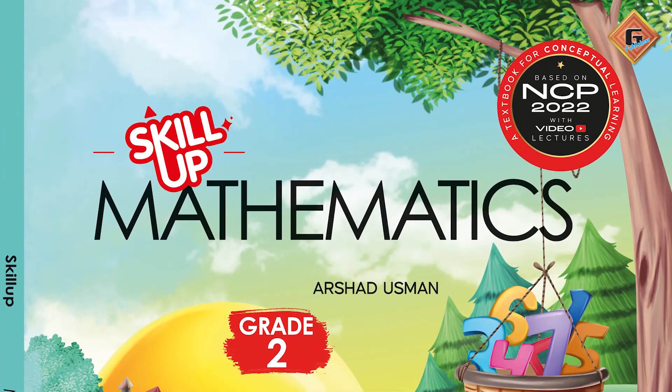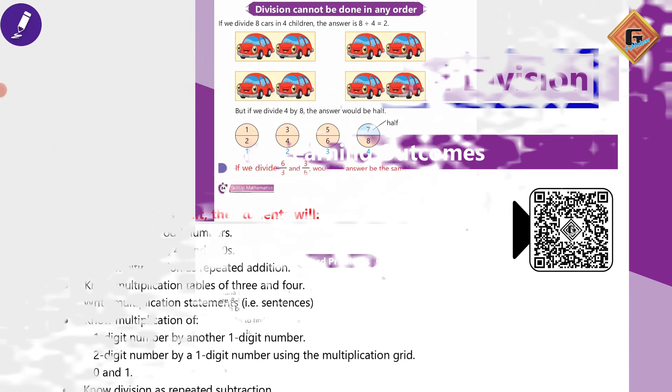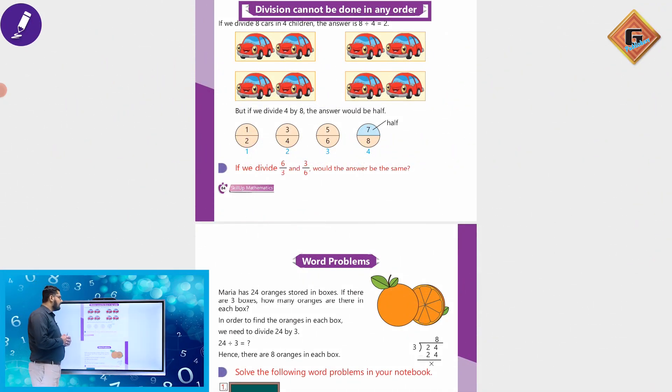In this book we are going to discuss Unit 3 and the title of Unit 3 is Multiplication and Division. Today's topic: Division cannot be done in any order.